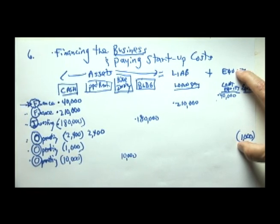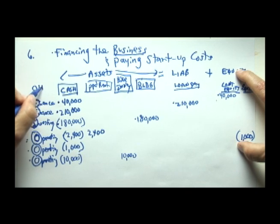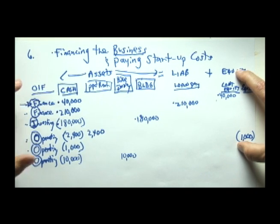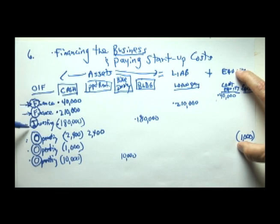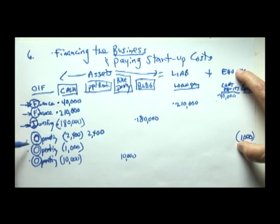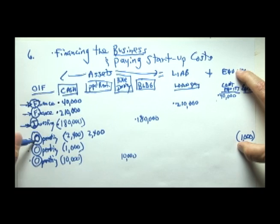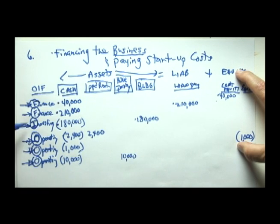Notice how every change in cash can be classified according to its primary category: Is it a financing activity? Is it a long-term investing activity? Or is it a normal, frequently recurring operating activity?